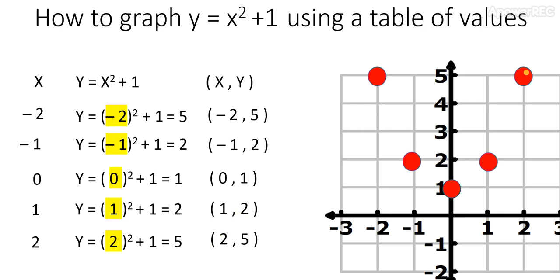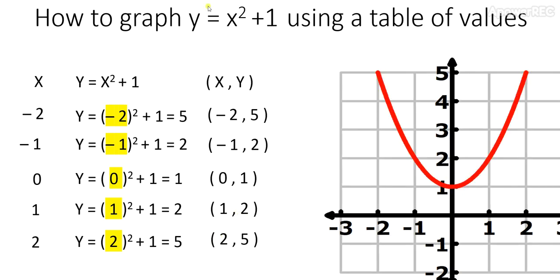Now the third step and the final step is to draw a smooth curve through your five key critical points. If you do it correctly, it should look something like this. And that's how you graph y equals x squared plus 1 using a table of values.